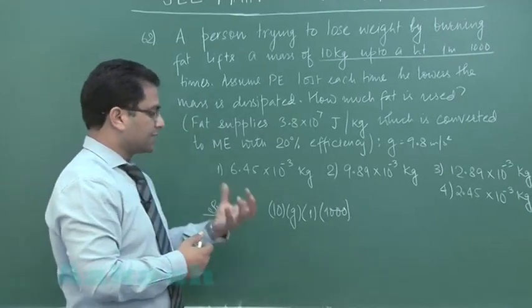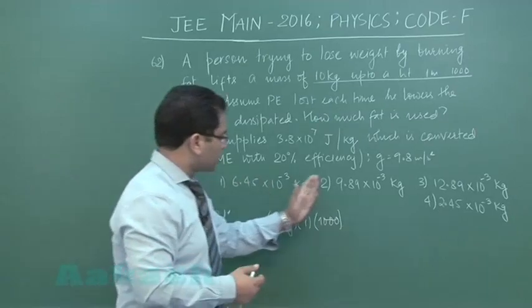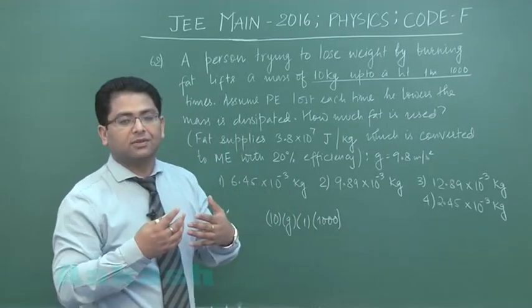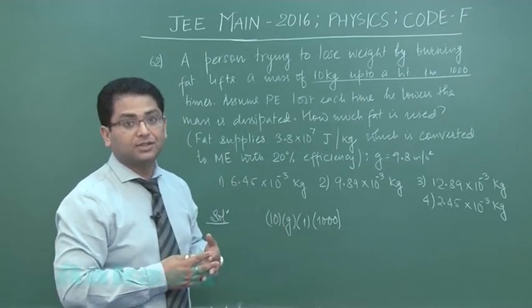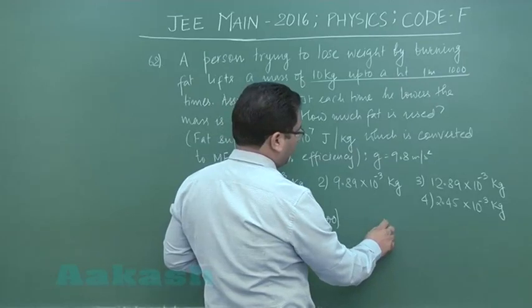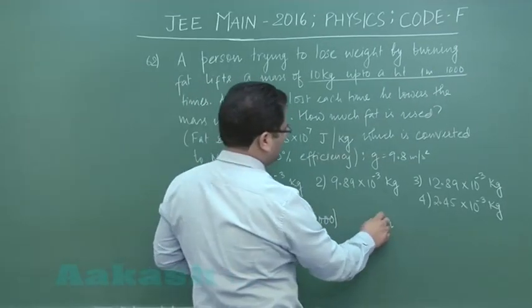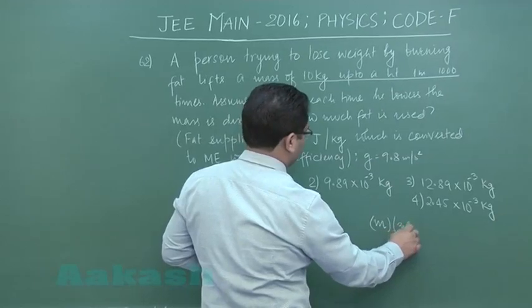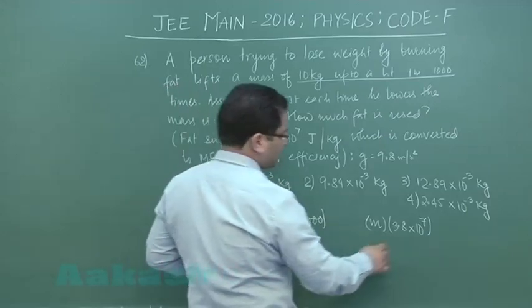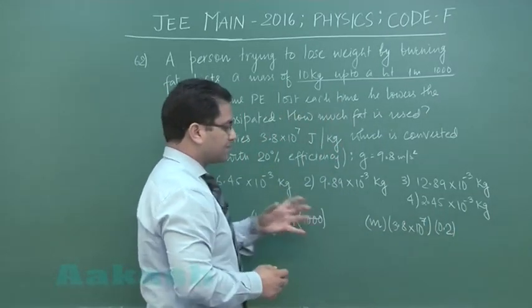Now this potential energy has to be supplied from the internal mechanism of the man. In other words, the fat has to burn. So let us say that MgH of fat burns. MgH of fat would be providing this much amount of energy. However, the efficiency is 20%, so 0.2. This much is the energy produced when MgH of fat is being burned, and this much is the energy required.